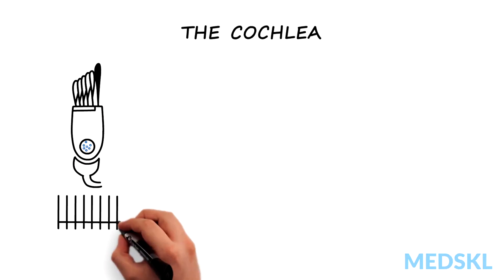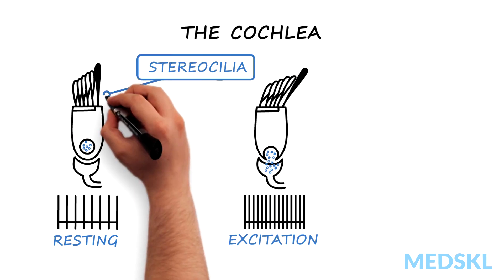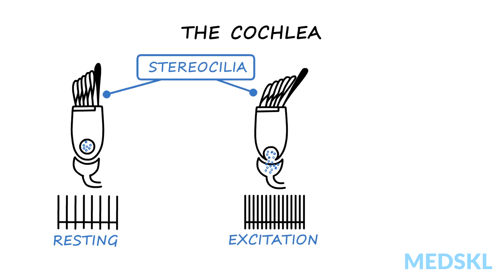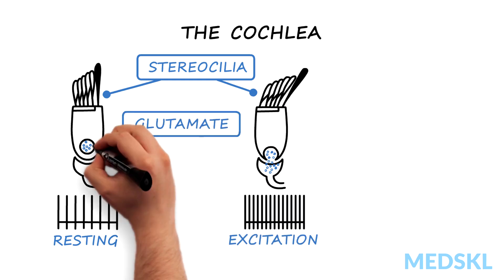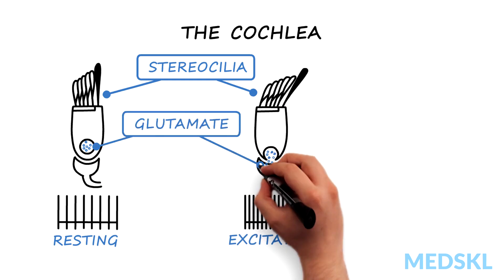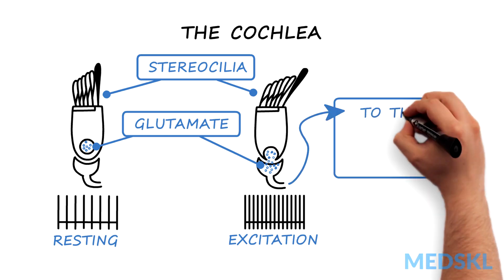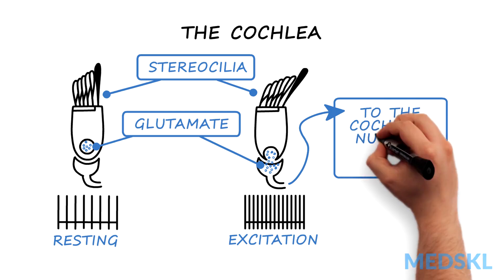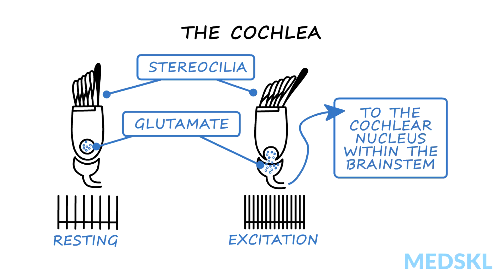The amplified basilar membrane motion then deflects the stereocilia of the inner ear hair cells. This triggers release of glutamate at the primary afferent synapse between the inner hair cell and the neurons of the cochlear nerve. The signal is then transmitted to the cochlear nucleus within the brainstem via the cochlear division of the eighth nerve.